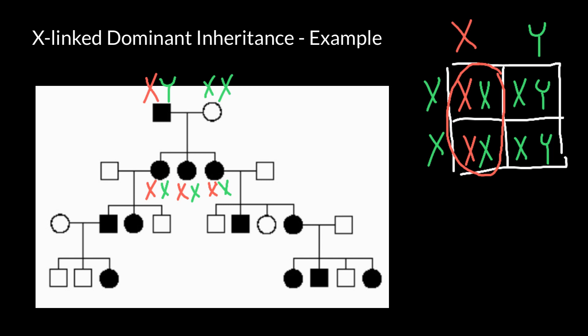We also have to take into account that all genetically unrelated people who marry into this family would have a normal genotype and phenotype. So this male would be normal X, Y, and this male here would also be normal X, Y. Now it is interesting what would happen in the next generation. Let's also put the genotype of the normal female — it's going to be normal X and normal X. Both these affected females have a defective X chromosome, so defective X and normal X.